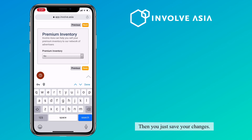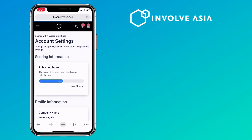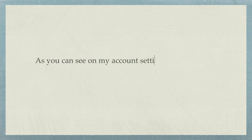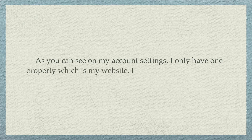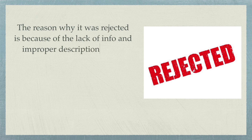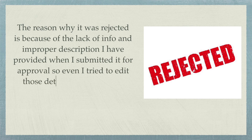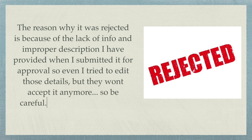Then you just save your changes. As you can see on my account settings, I only have one property which is my website. I tried to submit my Facebook group but it was rejected, so I cannot use it anymore. The reason why it was rejected is because of the lack of info and improper description I provided when I submitted it for approval. Even if I tried to edit those details, they won't accept it anymore. So be careful — no second chances.